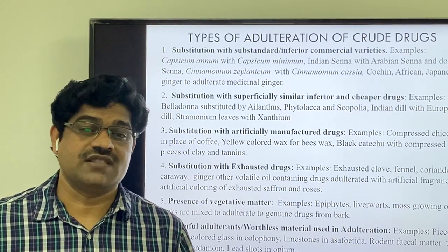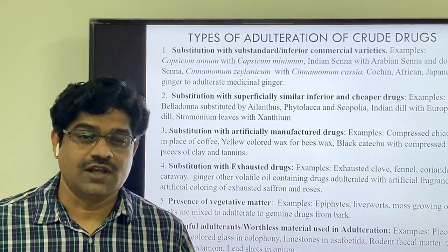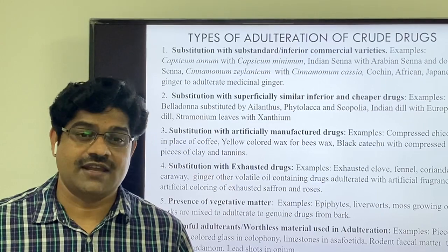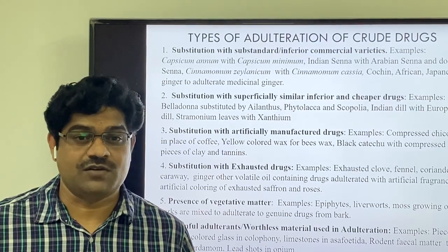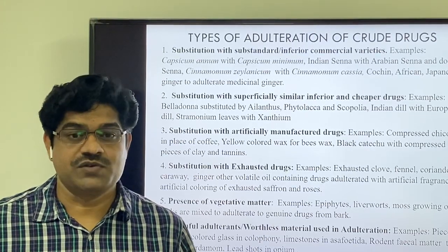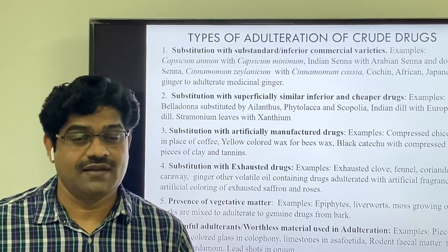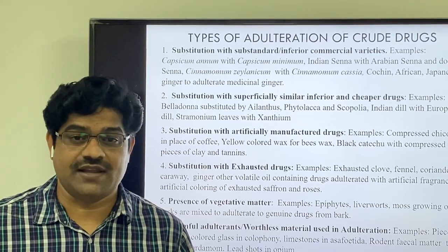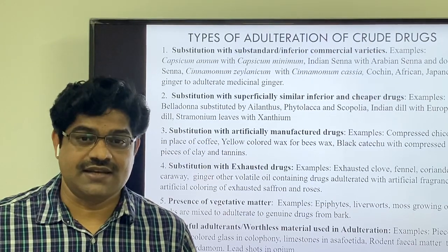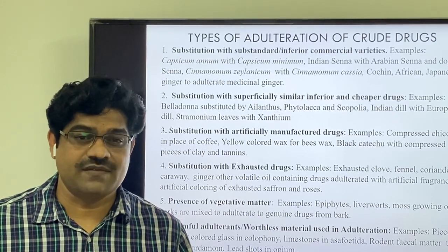The next type is substitution with superficially similar, inferior, and cheaper drugs. In this kind of adulteration, plants that may be related or unrelated and do not have similar chemical constituents, with an inferior chemical profile, may be used to adulterate the authentic drug. Examples include belladonna substituted by Ailanthus, Phytolacca, and Scopolia — none of which are related to belladonna — as well as Indian dill with European dill, and Stramonium leaves with Xanthium.